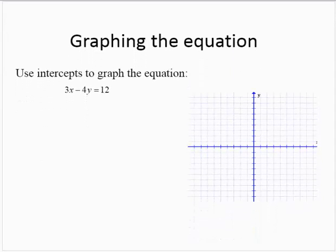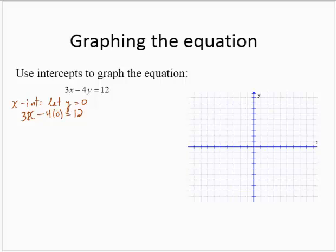Let's see another example: 3x minus 4y equals 12. To find the x-intercept, let y equal 0. We have 3x minus 4 times 0 equals 12. Since 4 times 0 is 0, we get 3x equals 12. Dividing through by 3, x equals 4. So the x-intercept is 4, 0.